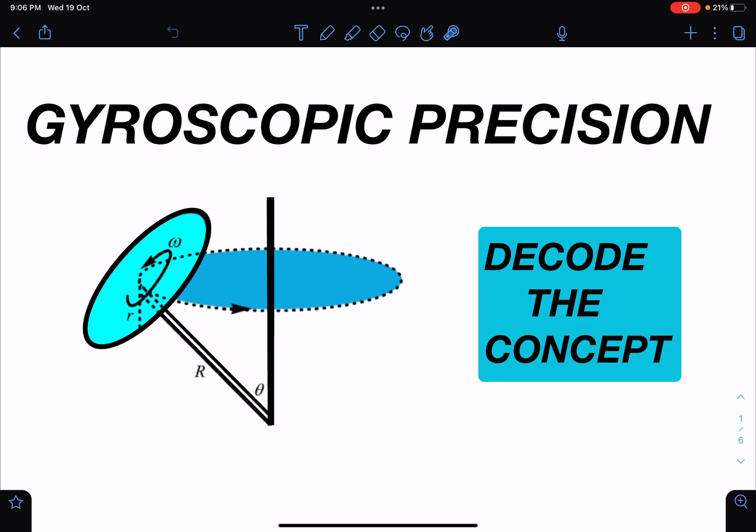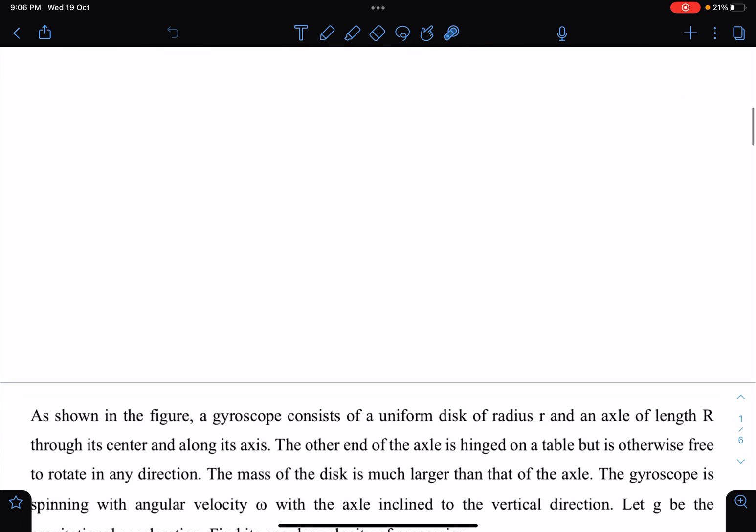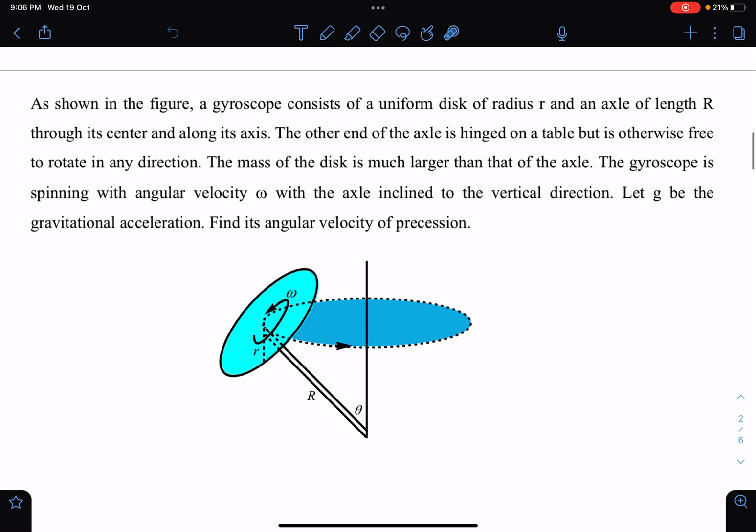So let's understand this concept and solve this question. Here is the problem statement. As shown in the figure, a gyroscope consists of a uniform disc of radius r and an axle of length capital R through its center along its axis.